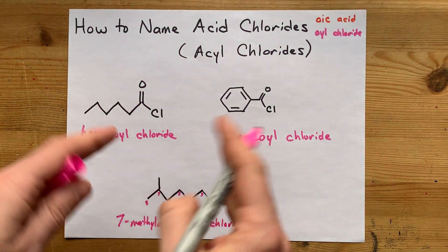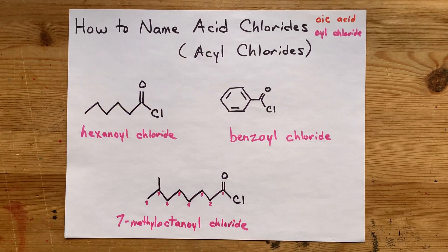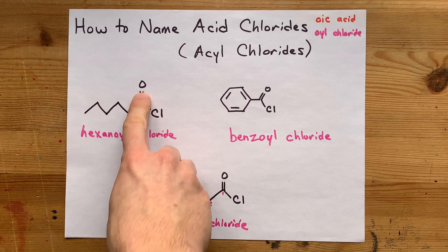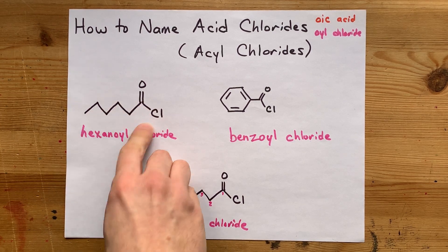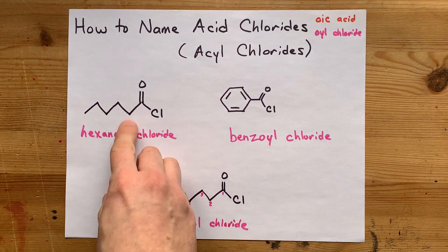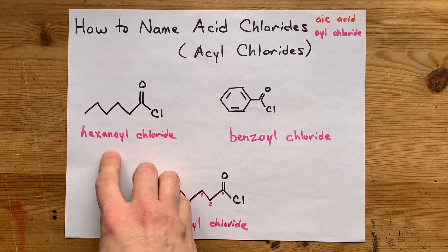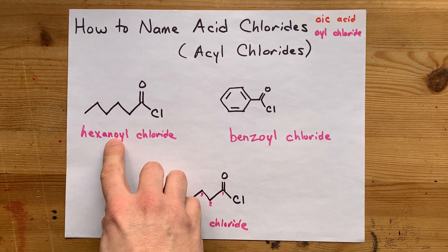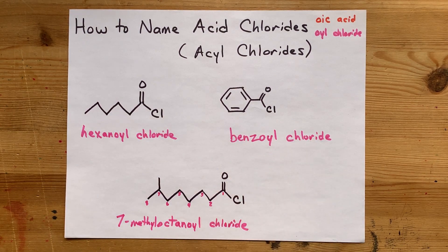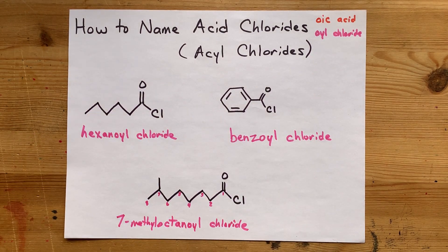Once you understand naming carboxylic acids — which you should if you're already at acid chlorides — you start numbering from the carbon that has the double-bonded O, count how many there are, use '-an-' for single bonds, '-en-' or '-yn-' for double or triple bonds along the chain, and this double-bonded O with a Cl gives you '-oyl chloride.' Three great examples for you. Thanks for being with me, and best of luck.